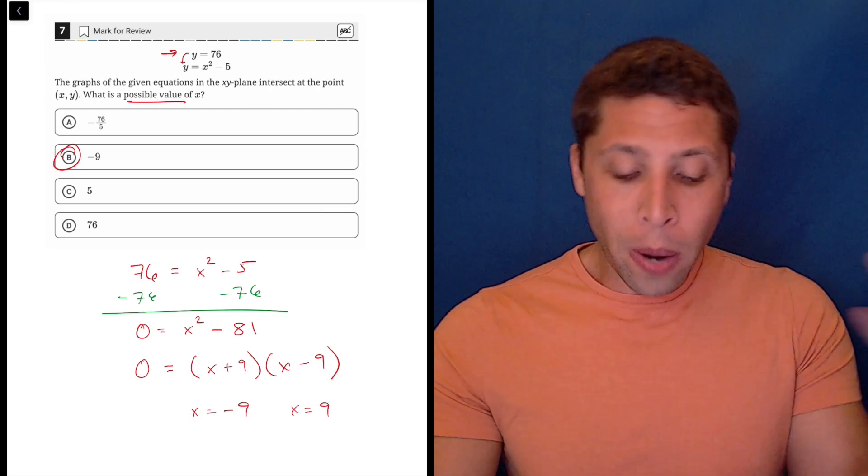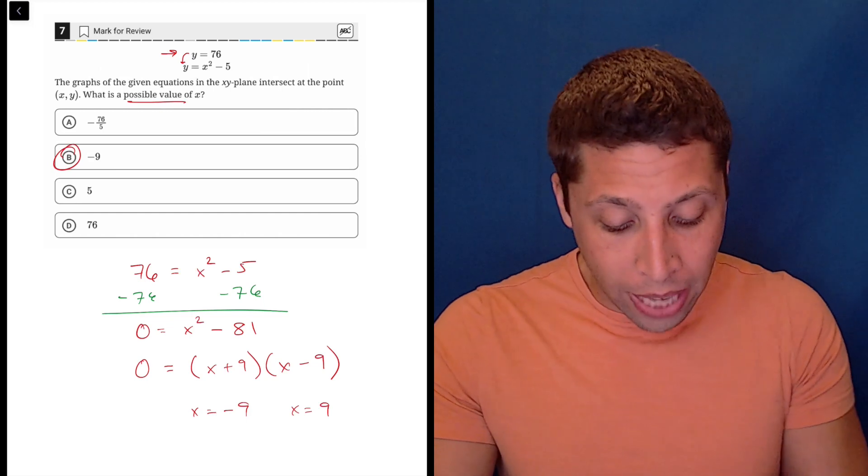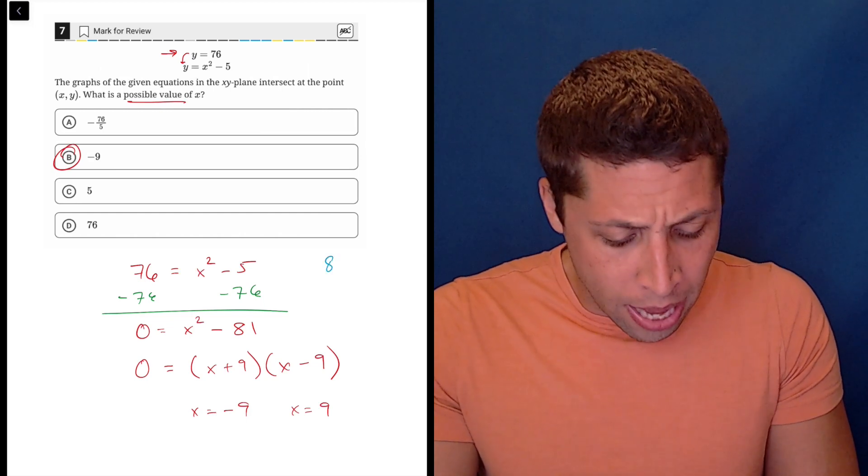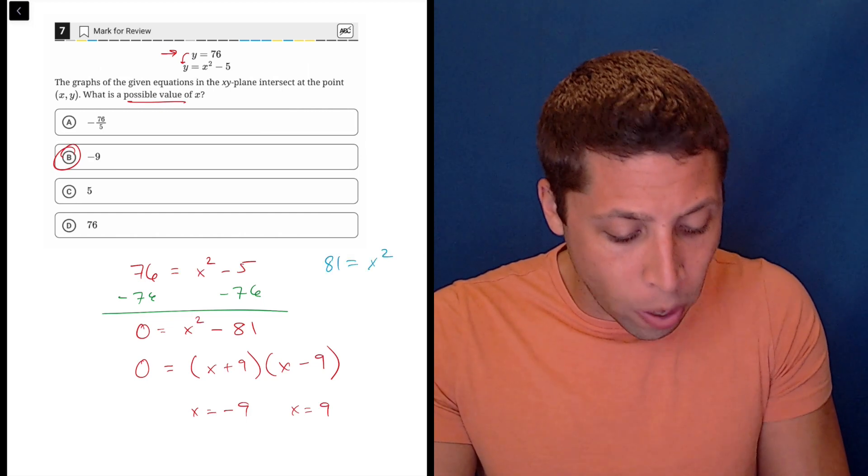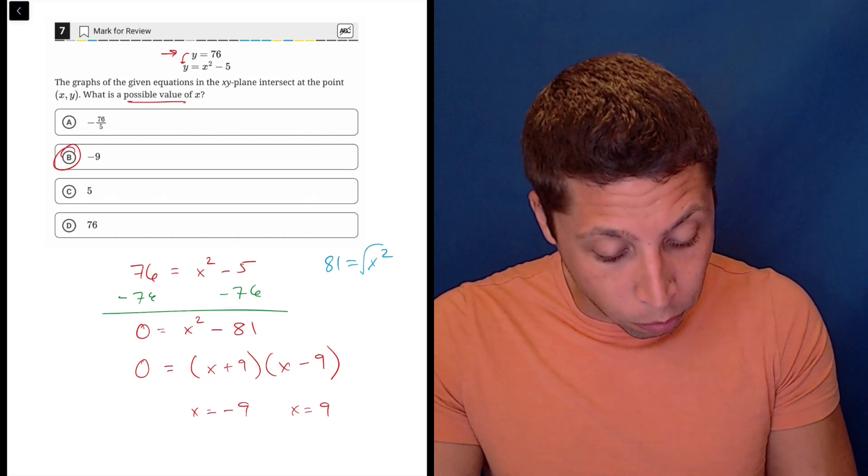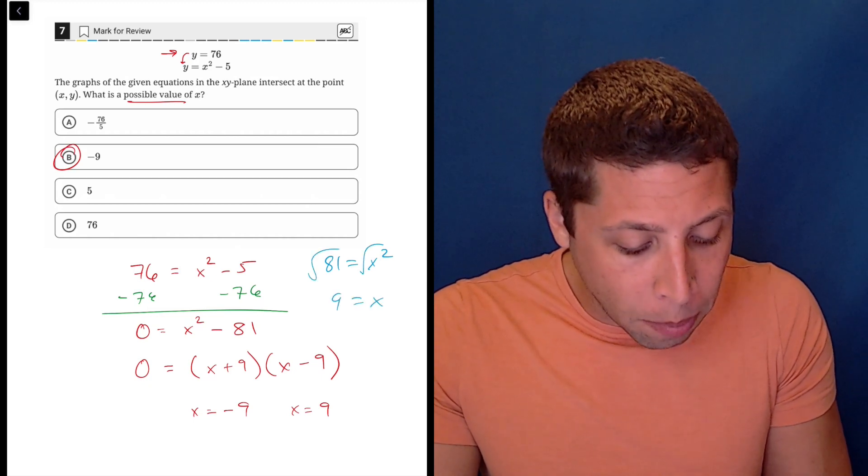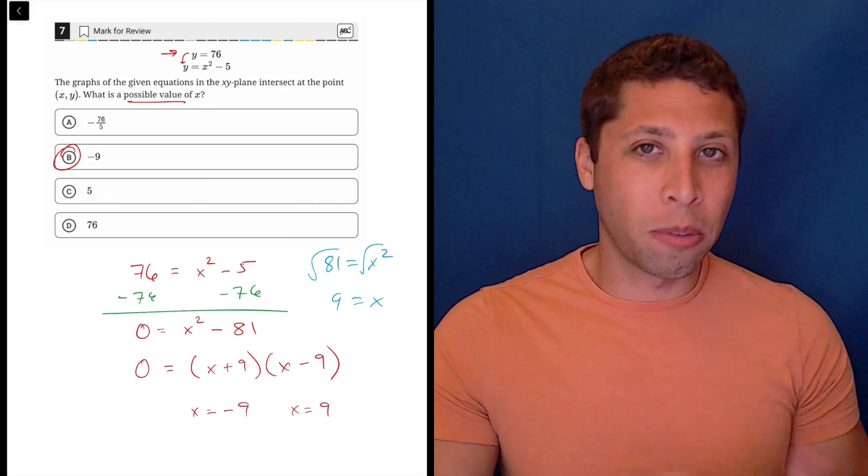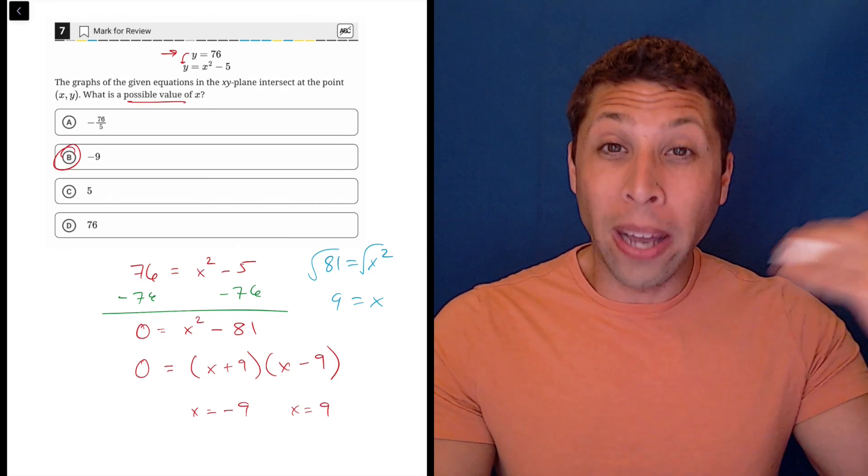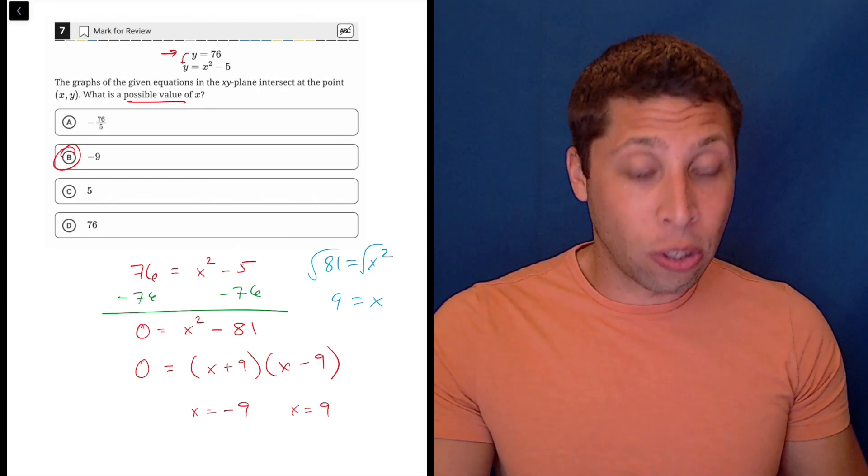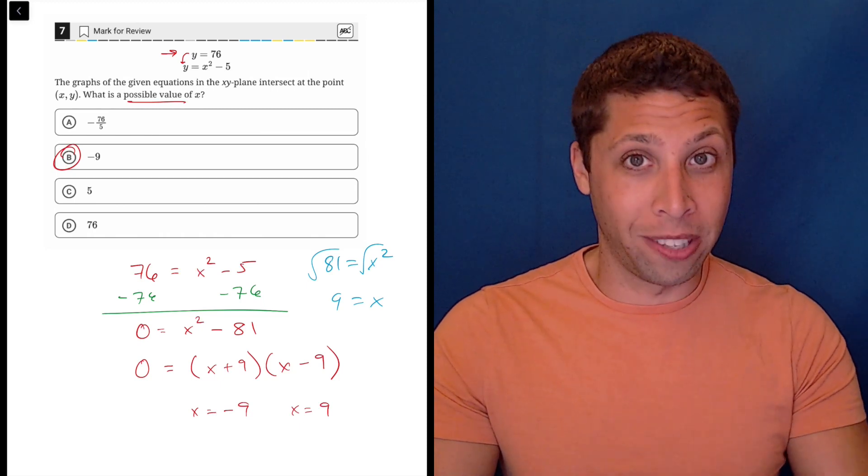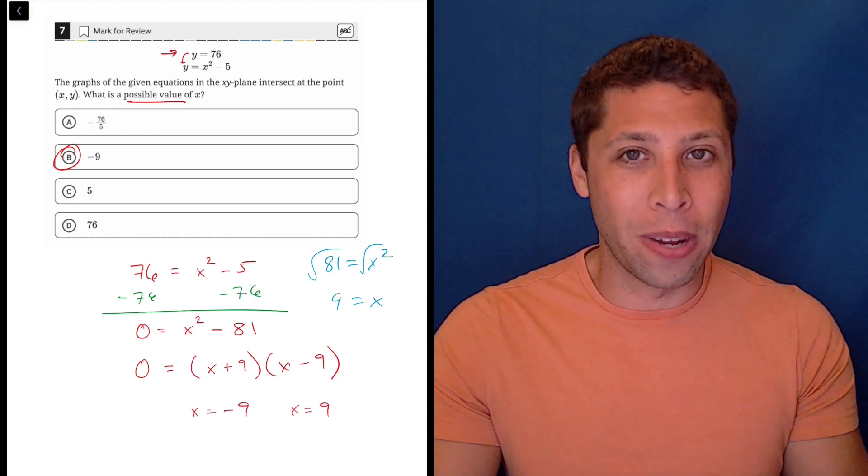Now if we had done it the other way and added the five over the other side, we might still have gotten that. We would have gotten 81 is equal to X squared and then most of you would have taken the square root of both sides. The problem is technically that square root symbol just gives us the positive root. Some of you might have remembered to take the negative as well, especially because that's an answer choice.